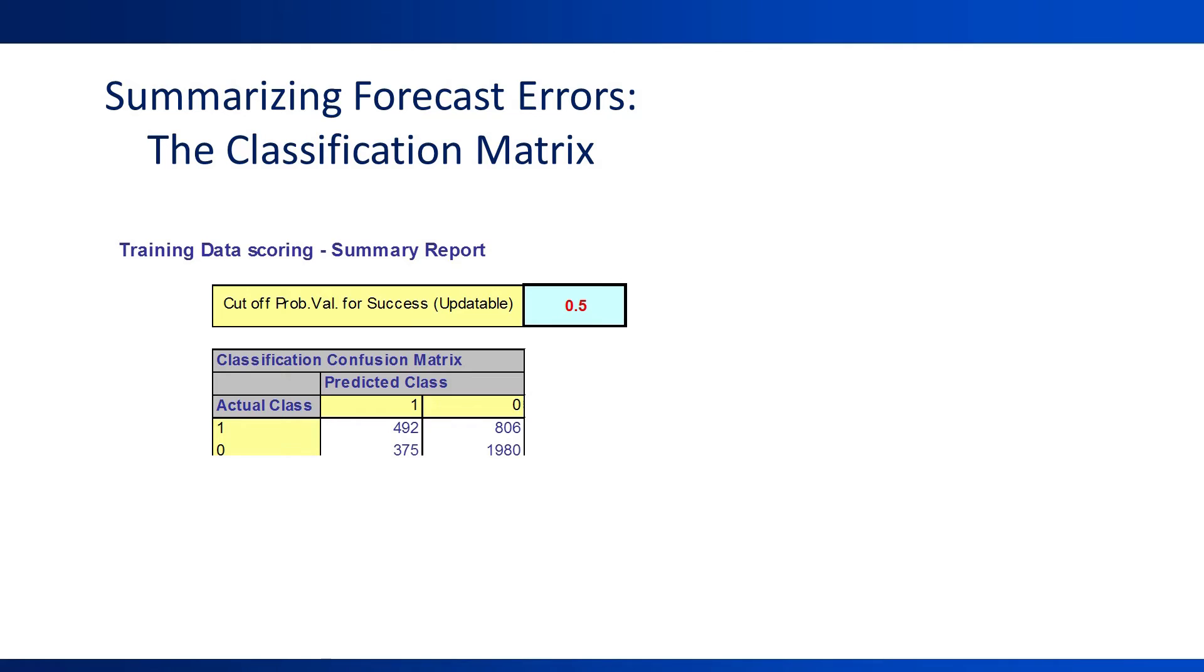A simpler and clearer way to summarize the performance of a model for binary forecasts is using a classification matrix. This is simply a two-by-two table that shows the counts of correctly classified zeros, correctly classified ones, misclassified zeros, and misclassified ones.